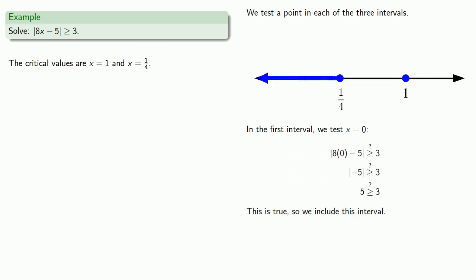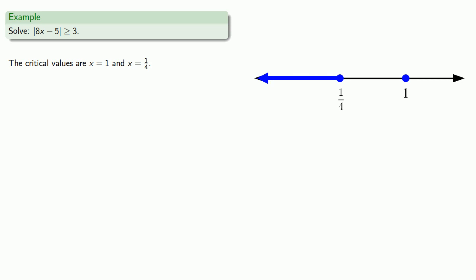Now we have this middle interval, and we have to check something in this interval. How about 3 fourths? And our inequality is false, so we have to exclude this interval.